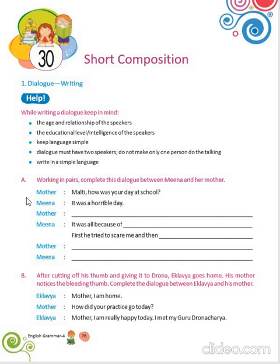Now come to A. You have to work in pairs and complete the dialogues between Meena and her mother. Mother: Meena, how was your day at school? Meena: It was a horrible day. Mother: What happened with you? Meena: It was all because of a boy called Rahul. First, he tried to scare me and then he tried to snatch my pen. Mother: Then what happened? Did you complain? Meena: Yes, I complained to my teacher. The teacher aptly punished him.